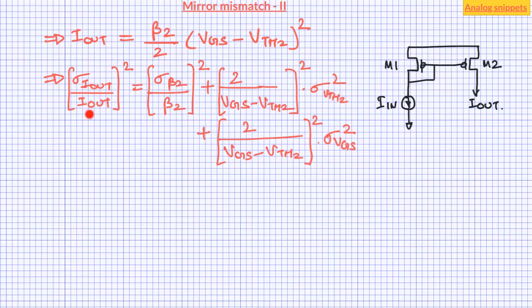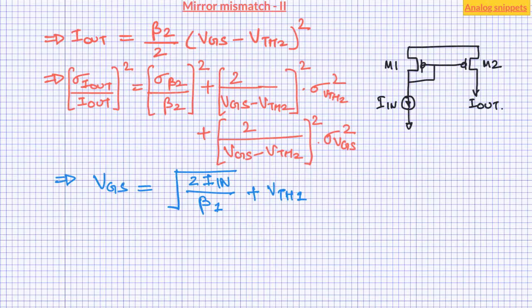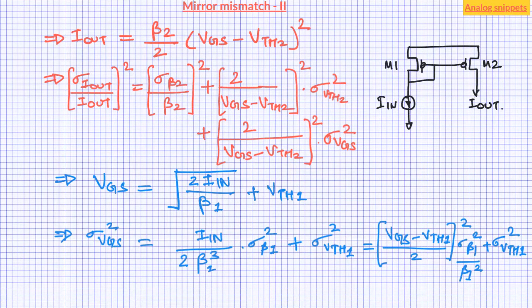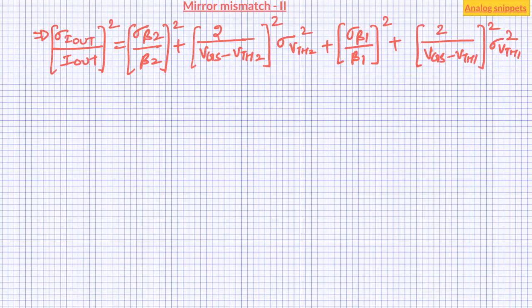Here I have written the equation of relative current variance. We are already familiar with the first two terms from the previous video, and now we have a third term. We can write V_gs in terms of I_in and the parameters of transistor M1. Assuming no variation in current I_in, we write the variance of V_gs using the propagation of variance equation, then substitute back. Assuming that the mean values of V_th2 and V_th1 are equal, those two terms cancel out. In the resulting equation, the first two terms are the mismatch from transistor M2 and the last two terms are the mismatch from transistor M1 — equal contributions from both devices.